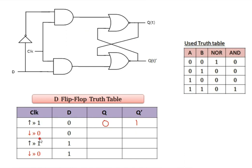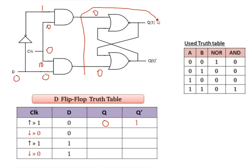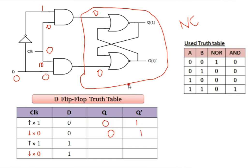For the negative clock pulse (zero), D=0: D goes to the input as zero, inverted as one. Zero and zero to AND gate gives zero; one and zero gives zero. This is an SR latch with zero-zero input, which is the no-change condition. The output remains the same as the previous output. The negative clock pulse does not activate the flip-flop.